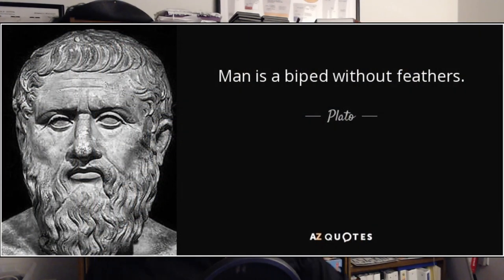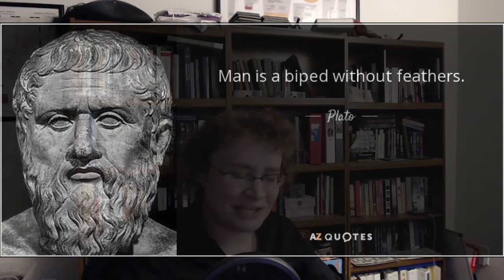You can think of famous examples in philosophy of the trouble of defining what a human is — the famous idea that a human is a biped without feathers, and the problems with that. But how did I actually teach that algorithm what a human is?